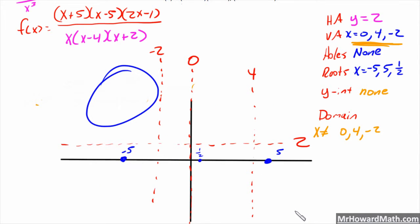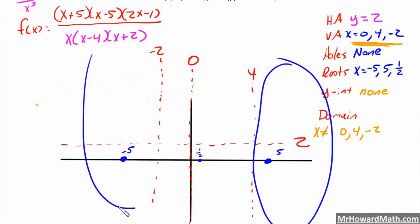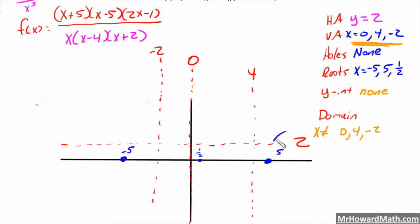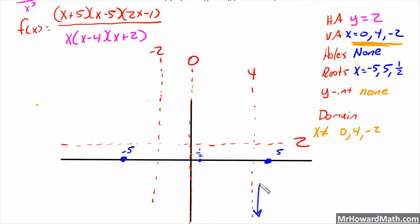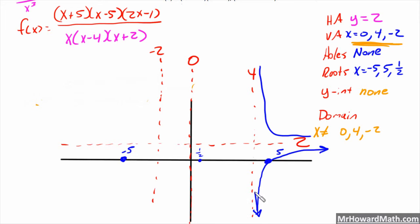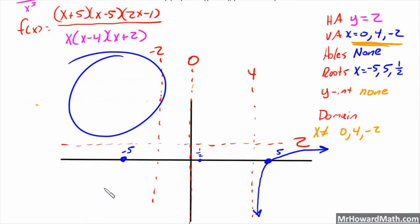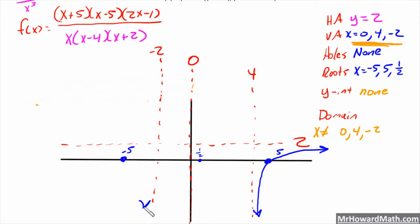Let's start at the far right and far left, because end behavior tells us we must approach the horizontal asymptote there — those sections are the easiest. On the far right, we have a root at x = 5 and a vertical asymptote at x = 4; the graph must go through that root, approach that vertical asymptote, and approach y = 2 as x → ∞. On the far left, similarly the graph must go through x = -5 and approach y = 2 as x → -∞.